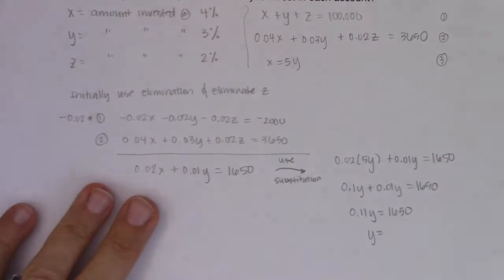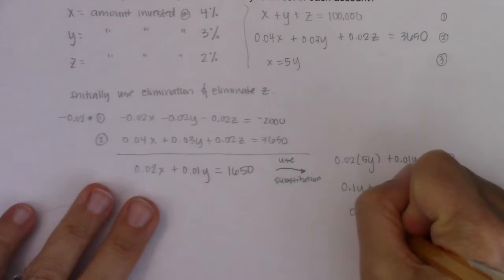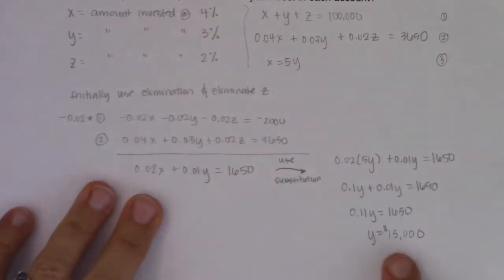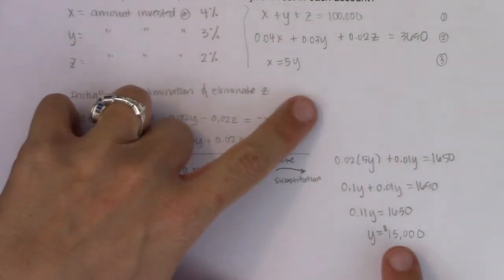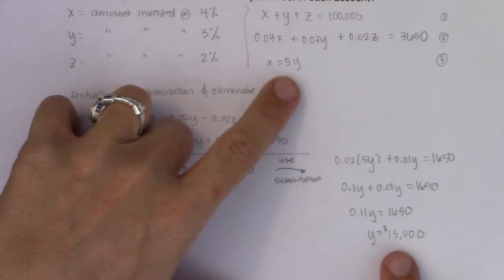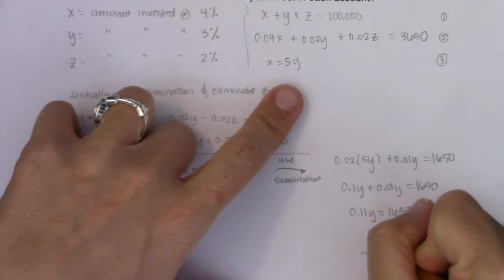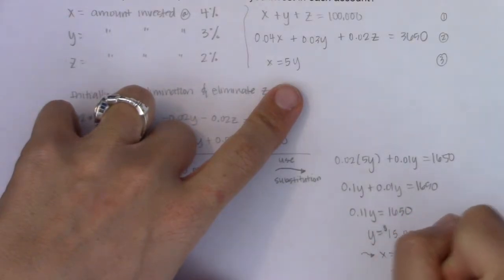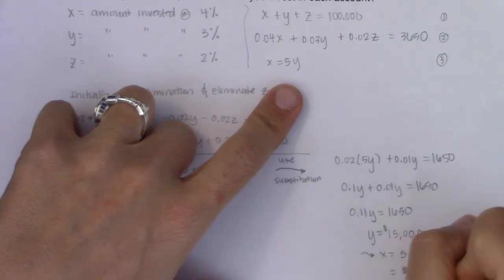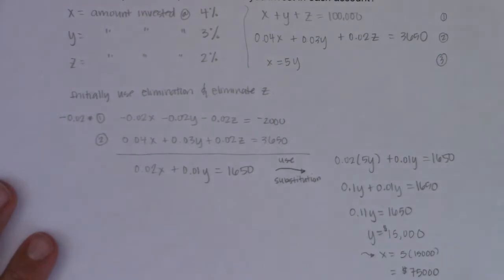Dividing both sides by 0.11: y = 1,650 ÷ 0.11 = 15,000. So I deposited $15,000 in the 3% account. Since x = 5y, x = 5 × 15,000 = 75,000. I deposited $75,000 in the 4% account.